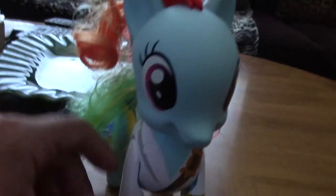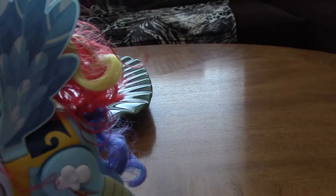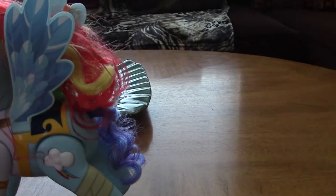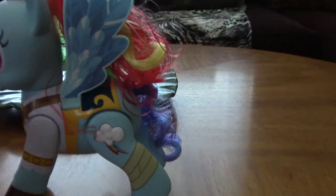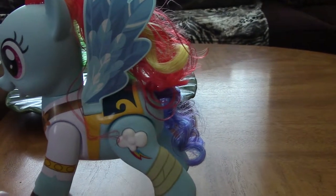It also comes with a little crayon so you can color the wings if you want to, a little color marker. Apparently, her wings get colorized to something like that in the movie when she does the Sonic Rainboom, I'm guessing, that we see in the trailer.